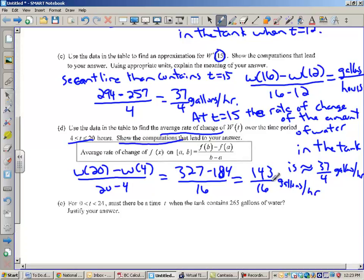And this is units. It doesn't say units, but I'm going to put that anyway. Gallons per hour. What does this mean? We don't have to write it down, but the average rate of change between 4 and 20, at any point between there, the average amount of water, or the average rate of change for the water that's being poured into the tank is 143 sixteenths gallons per hour.